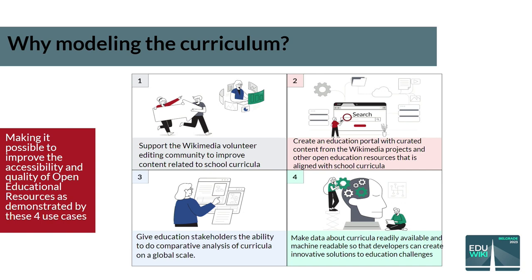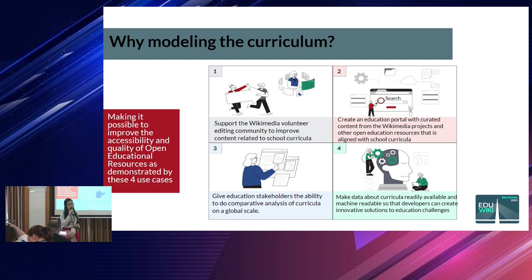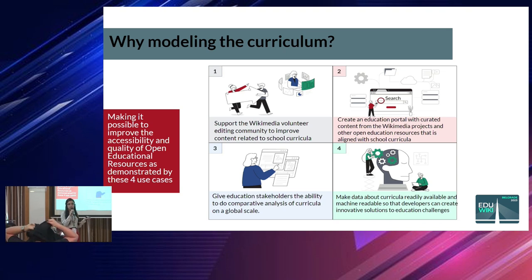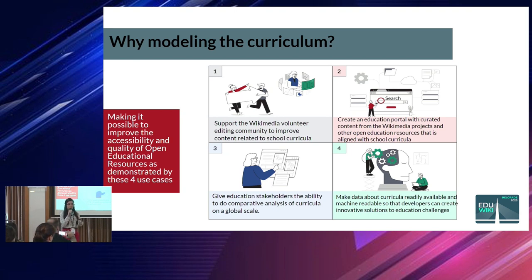Second use case: say I'm a school teacher planning to innovate my course, but I don't know which Wikipedia articles are linked to my course — for example, if I'm teaching mathematics. With this project, you can go to an interface or app and with just a few clicks, run a query to find which articles are aligned with the course you're teaching. You take those links, read the articles, and you have a wealth of information to restructure and enrich your course content.